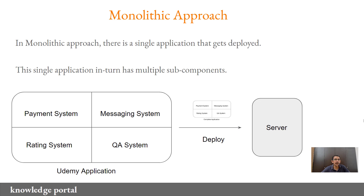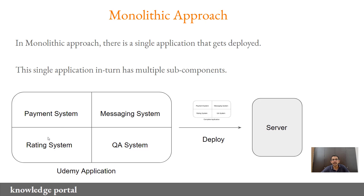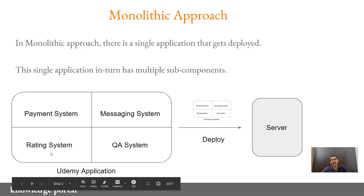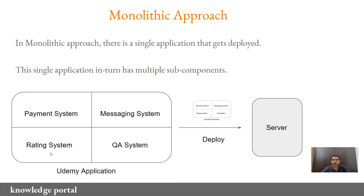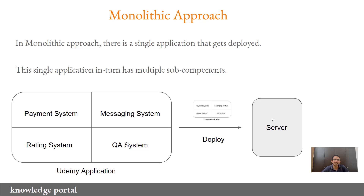Let's quickly look into the architecture of a monolithic application. In a monolithic based approach there is a single application that gets deployed and this single application in turn has multiple sub-components. Let's consider the Udemy application as an example since everyone is familiar with it. Assuming Udemy is based on a monolithic architecture, within the single application you have various subsystems related to payment, ratings, messaging, and QA — all of them together forming a single application. If you want it up and running, you deploy the complete application package to a server and users can log in and start to use it.